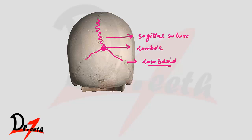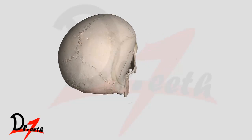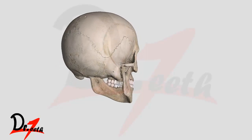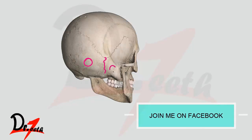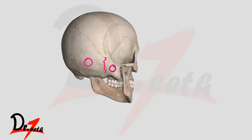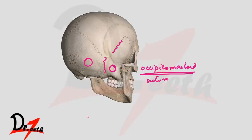If we tilt the skull, we can find a suture between the occipital bone and the mastoid process — that is called the occipital mastoid suture. We take the name of the suture from the bones involved. And then we find a suture between the parietal bone and the mastoid process of the temporal bone.